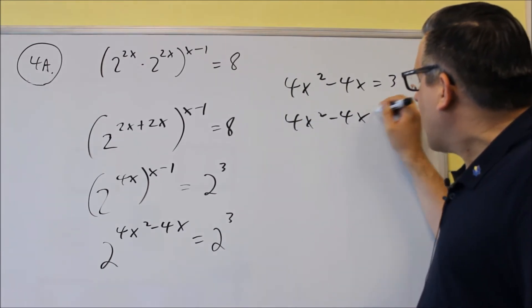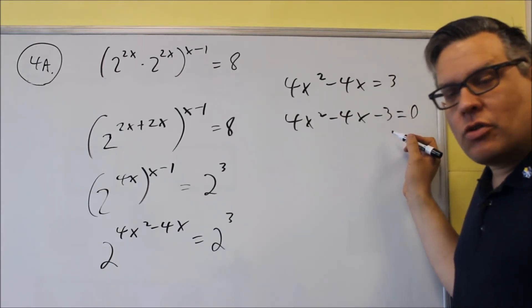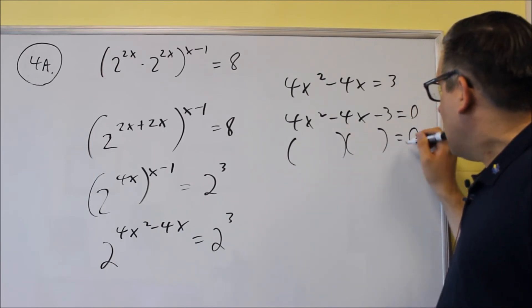So 4x squared minus 4x minus 3 equals 0 is what you want to do. So bring that 3 over, and now we can factor it on this side.